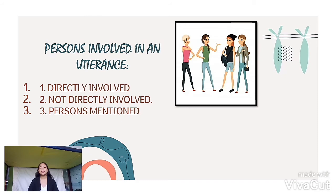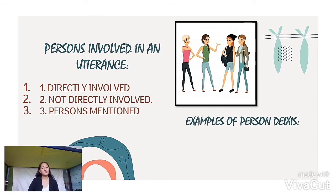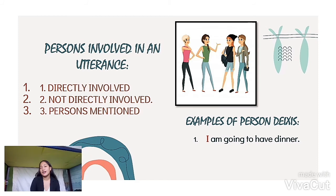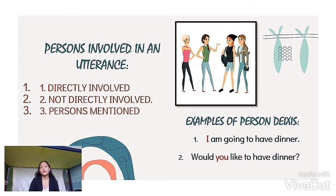So examples of person diaccess: Number one — I am going to have dinner. I is a person diaccess. And — Would you like to have dinner? So you is the person diaccess in this example.